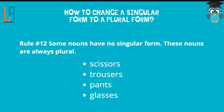Rule number twelve: some nouns have no singular form — they are always plural. For example, scissors, trousers, pants, and glasses. This is because these objects have two sides. Scissors has two sides, trousers has two sides, and the same goes for pants and glasses. So they have no singular form and are always plural.